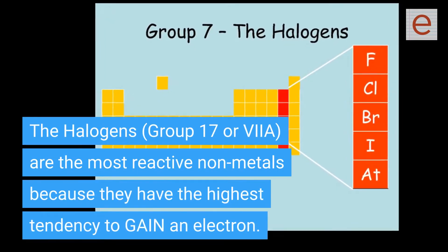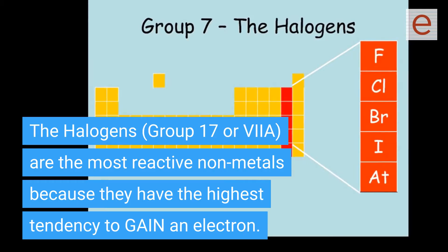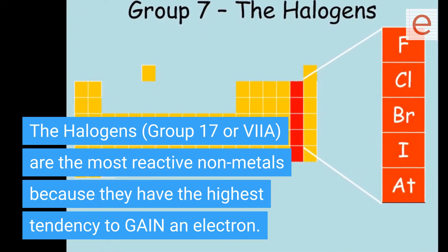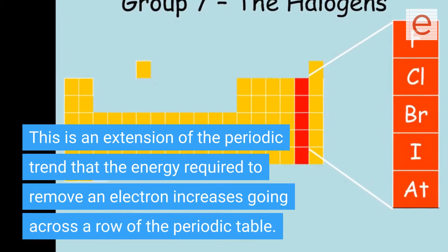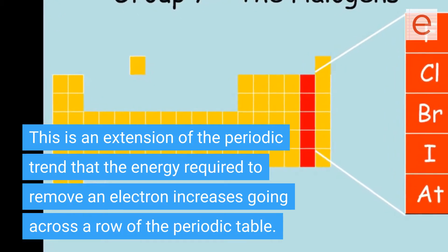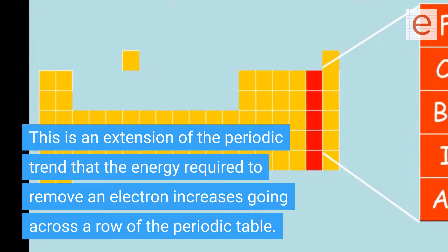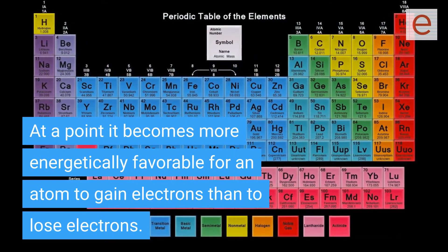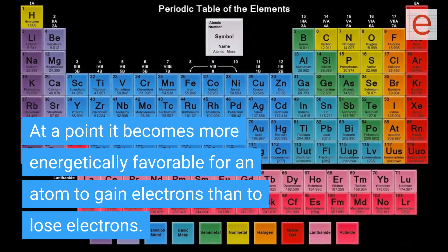This is an extension of the periodic trend that the energy required to remove an electron increases going across a row of the periodic table. At a point, it becomes more energetically favorable for an atom to gain electrons than to lose electrons.